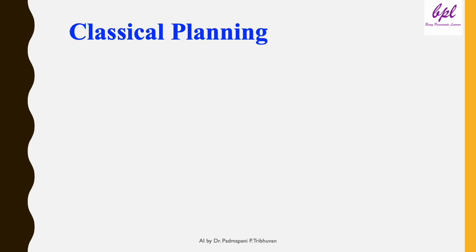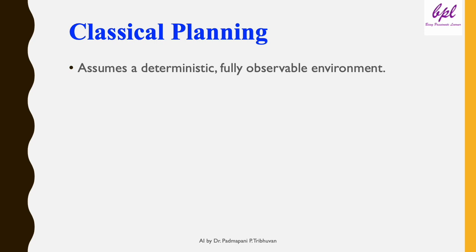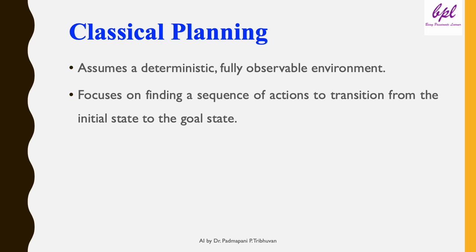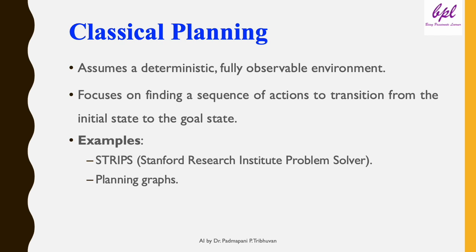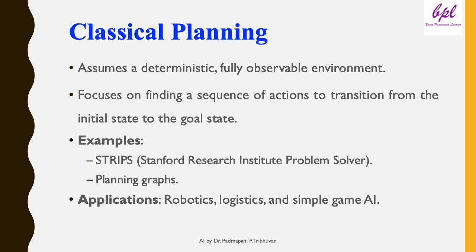Classical planning assumes a deterministic, fully observable environment. It focuses on finding a sequence of actions to transition from the initial state to the goal state. STRIPS and planning graphs are examples of classical planning — STRIPS stands for Stanford Research Institute Problem Solver. Classical planning is used in robotics, logistics, and simple AI games.